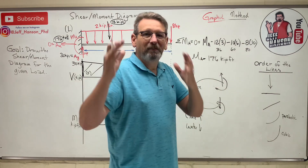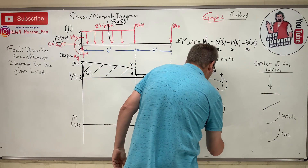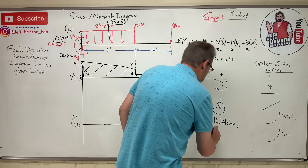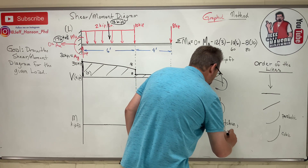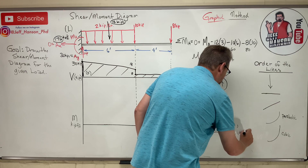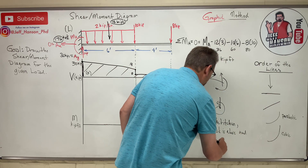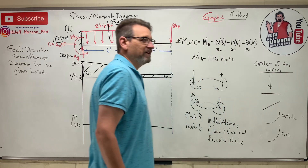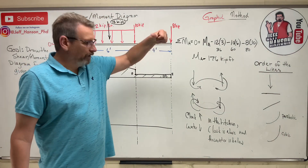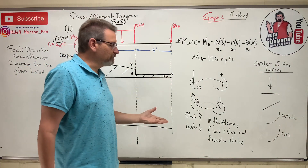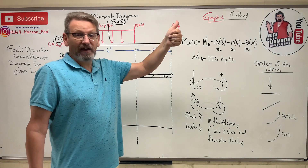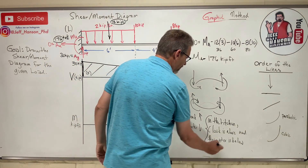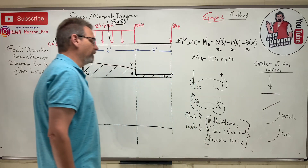Here's a silly trick to remember moment direction: in the kitchen, the clock is above and the counter is below. So a clockwise moment makes you go up the graph, and a counterclockwise moment makes you go down the graph. It's a little trick to help you remember which way moments make you jump on the M diagram.